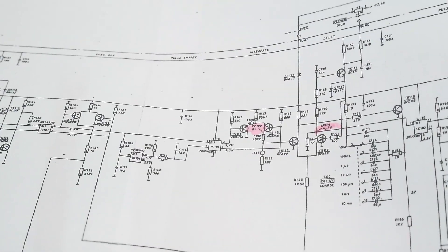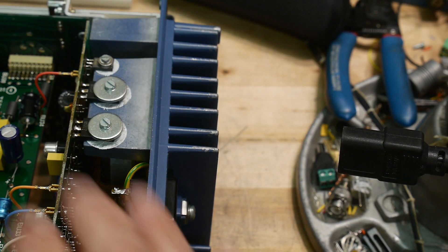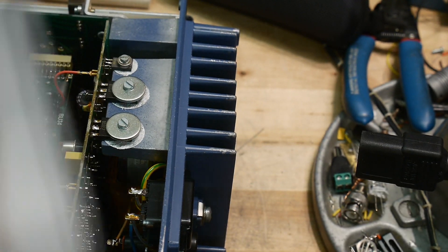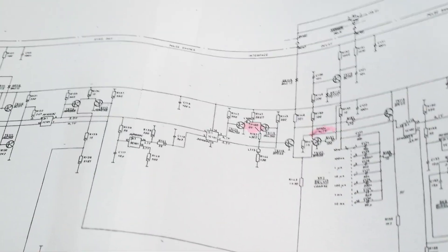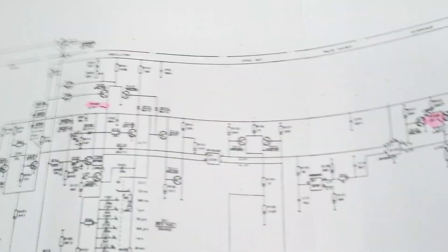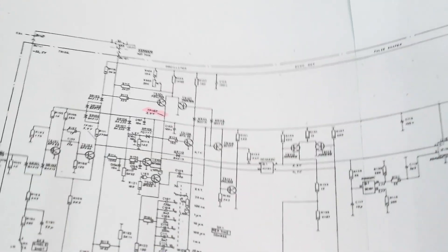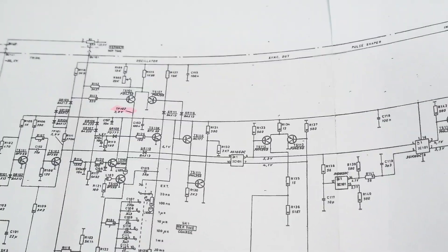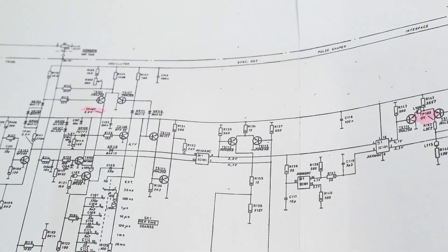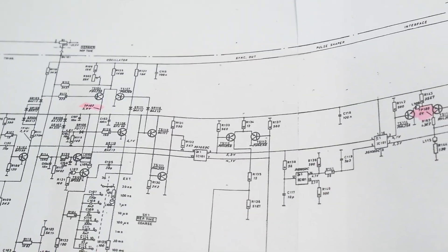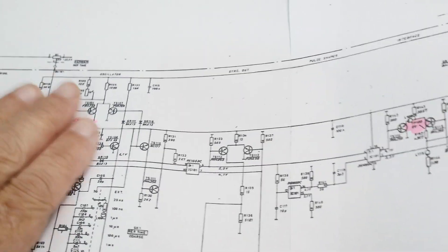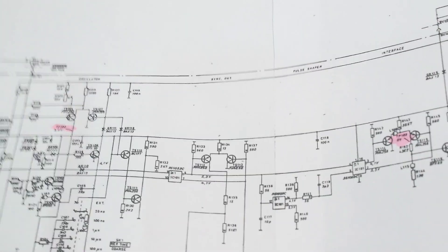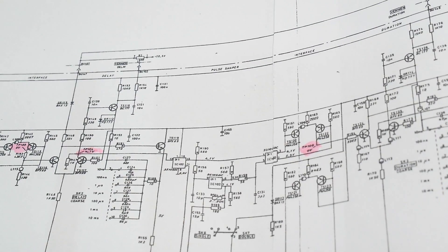We have this schematic and the board has a whole bunch of test points on it, so let's go through those. This pulse generator can be supplied with an external trigger and it'll create a pulse from that trigger. If it doesn't have an external trigger, it uses an internal oscillator - a square wave oscillator. That square wave then needs to get turned into a pulse.